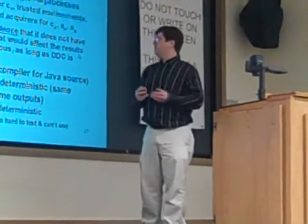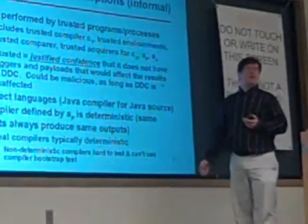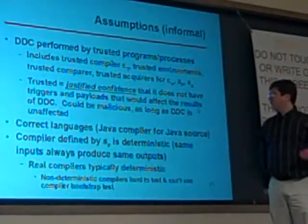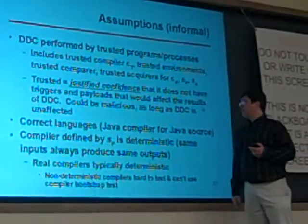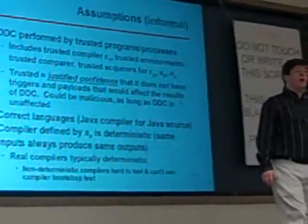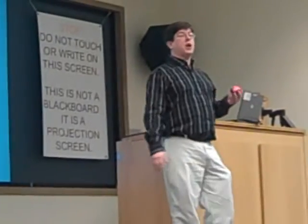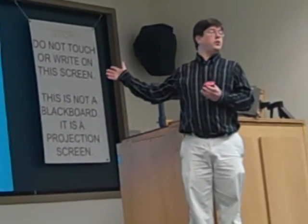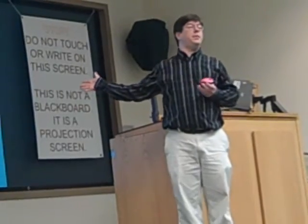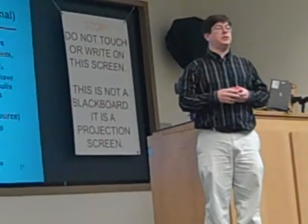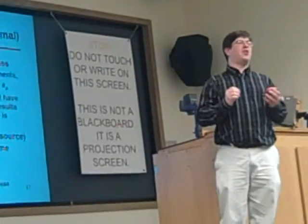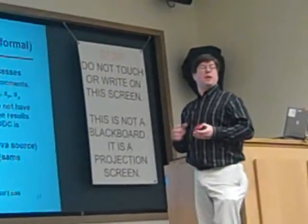By "trusted" I mean there is justified confidence that whatever is trusted does not have triggers and payloads that would affect the results of DDC — I don't require them to be non-malicious, just that they don't affect DDC results. I also assume correct languages, and require that the compiler defined by S-sub-P is deterministic: same inputs always produce the same outputs. Real compilers generally meet this criterion, and the bootstrap test also requires determinism.